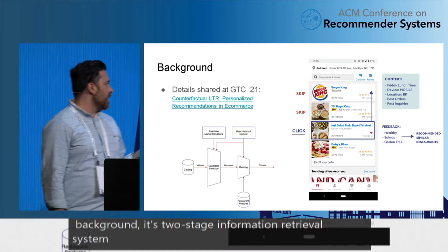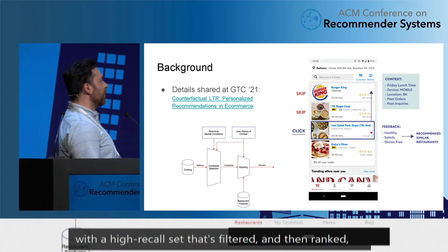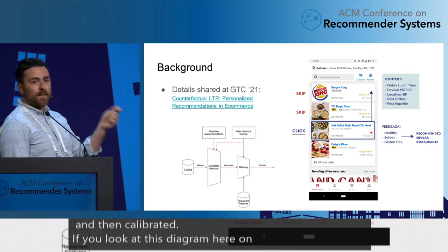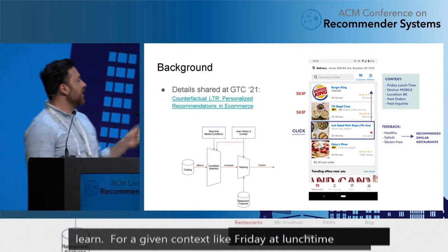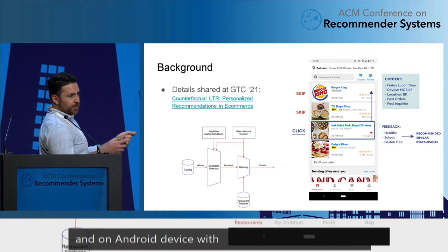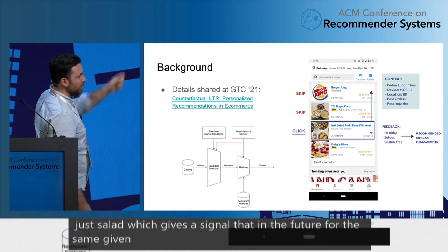If you look at this diagram on the left, it's a picture of what the app looks like and how we learn. For a given context — like Friday at lunchtime on an Android device in Brooklyn with my profile logged in — I'll click on the third impression, which is a salad, which gives a signal that in the future for the same context I might want to rank the salad above the burgers and the bagels. This is a learning-to-rank objective on bandit feedback.